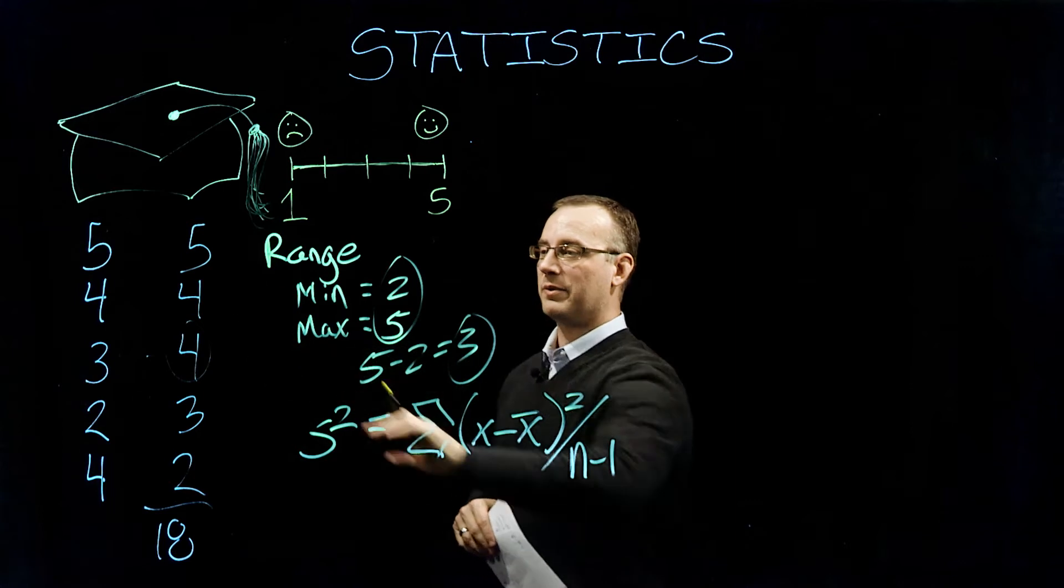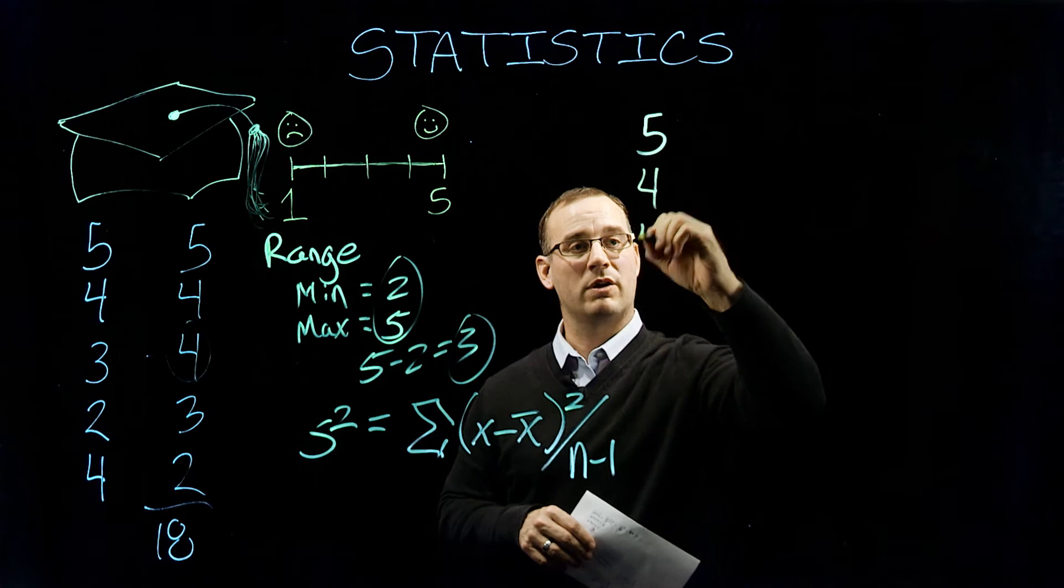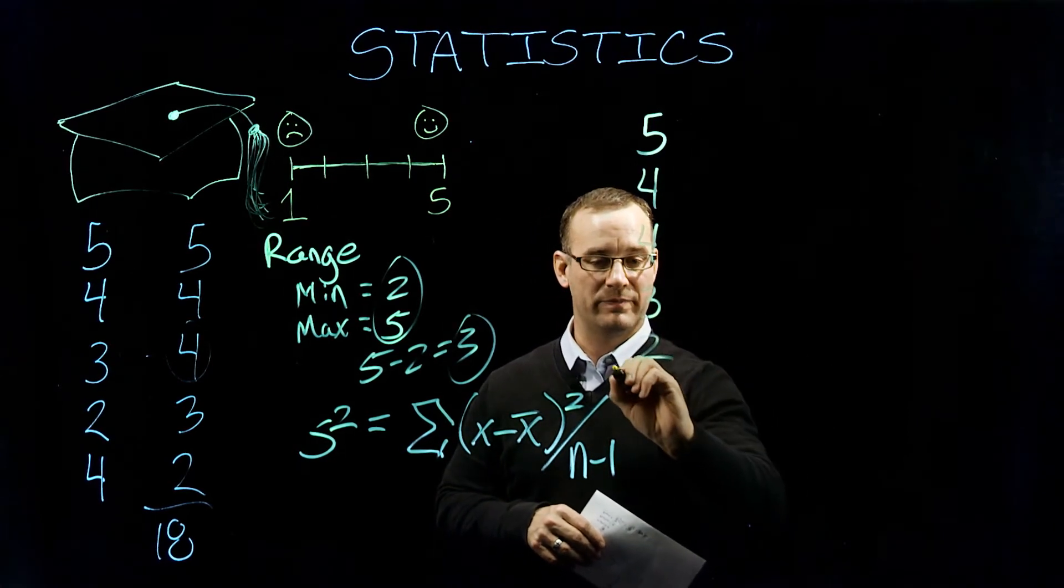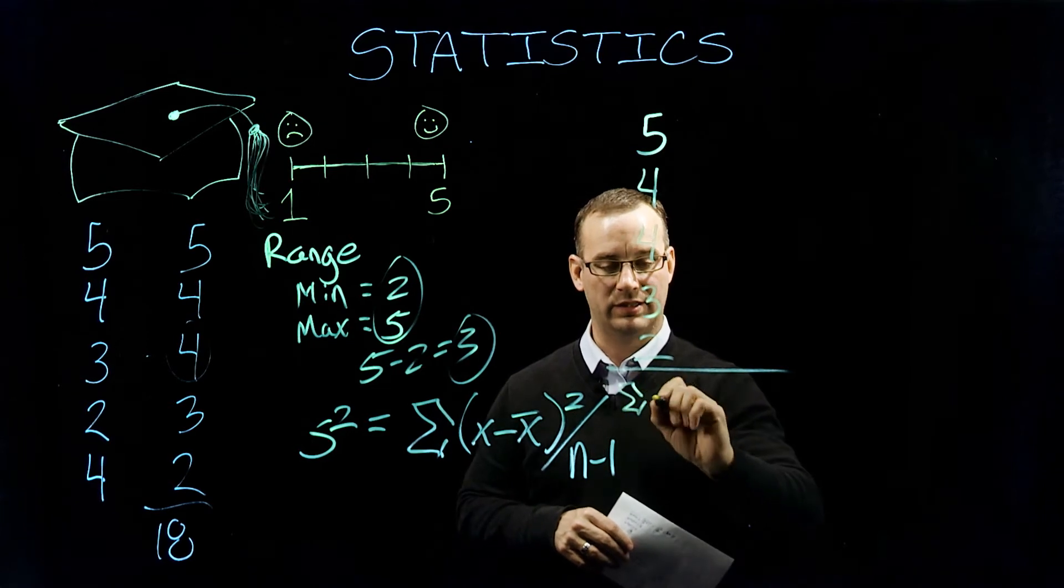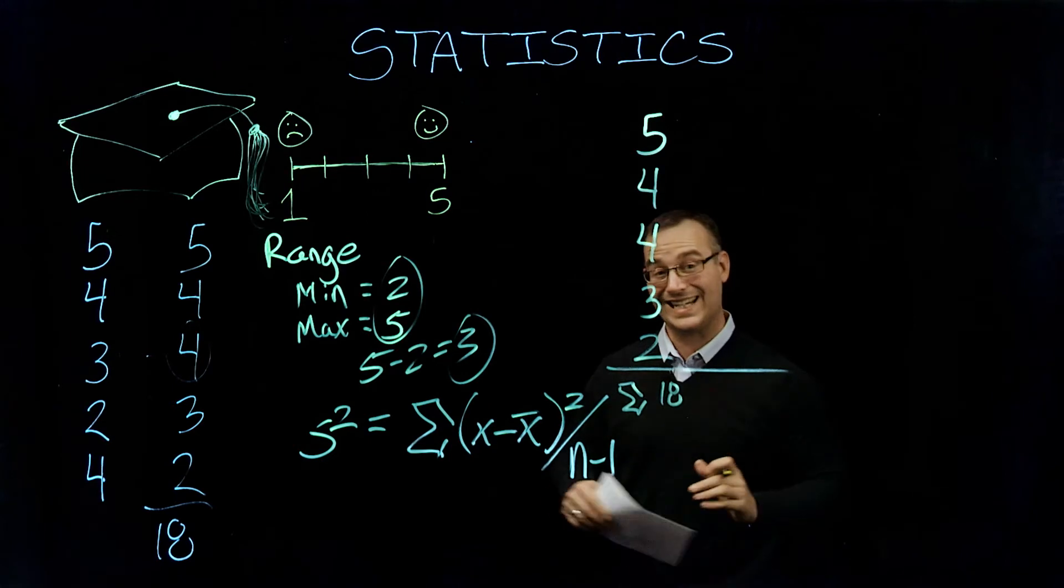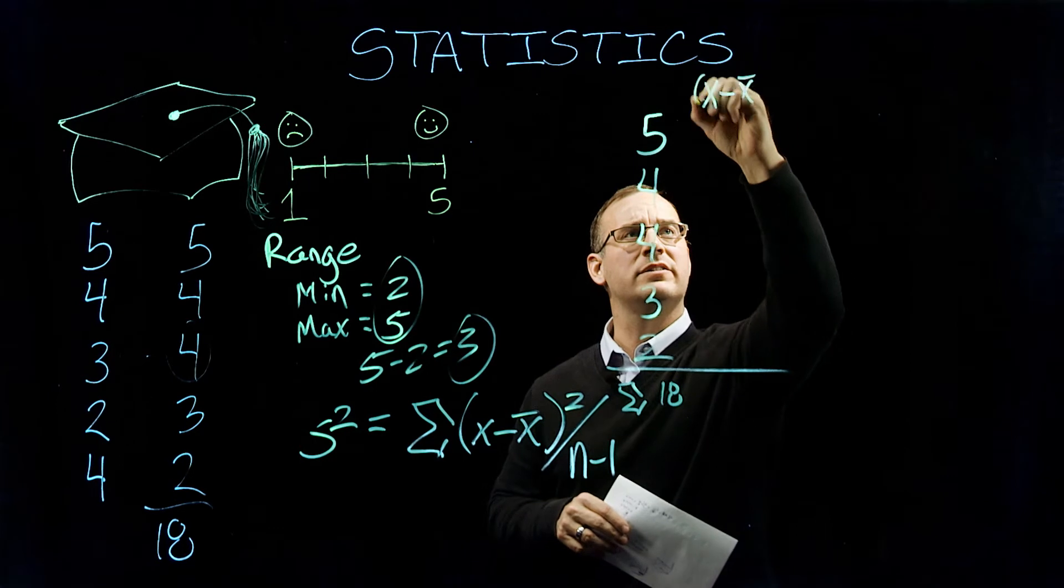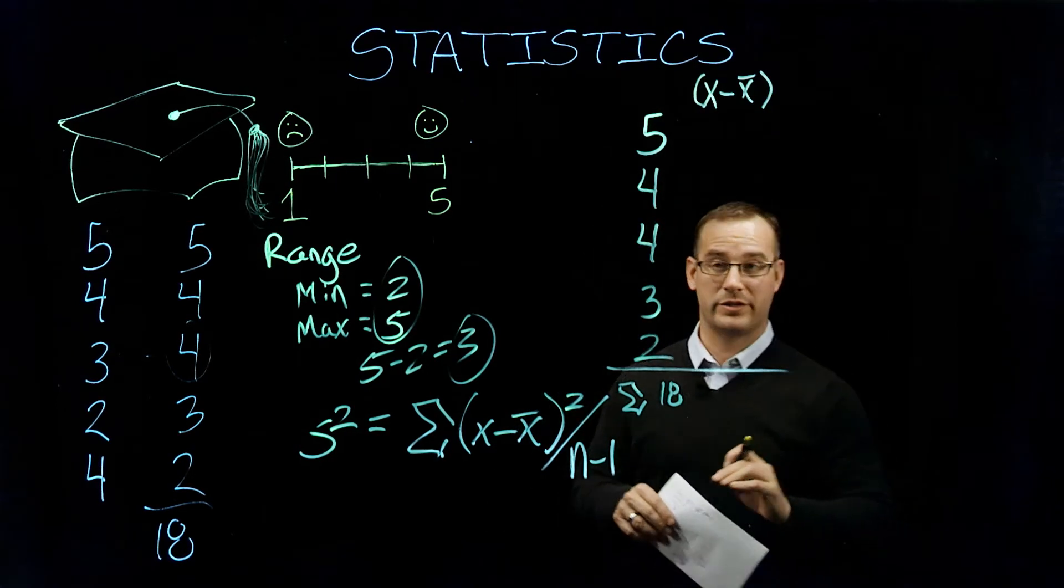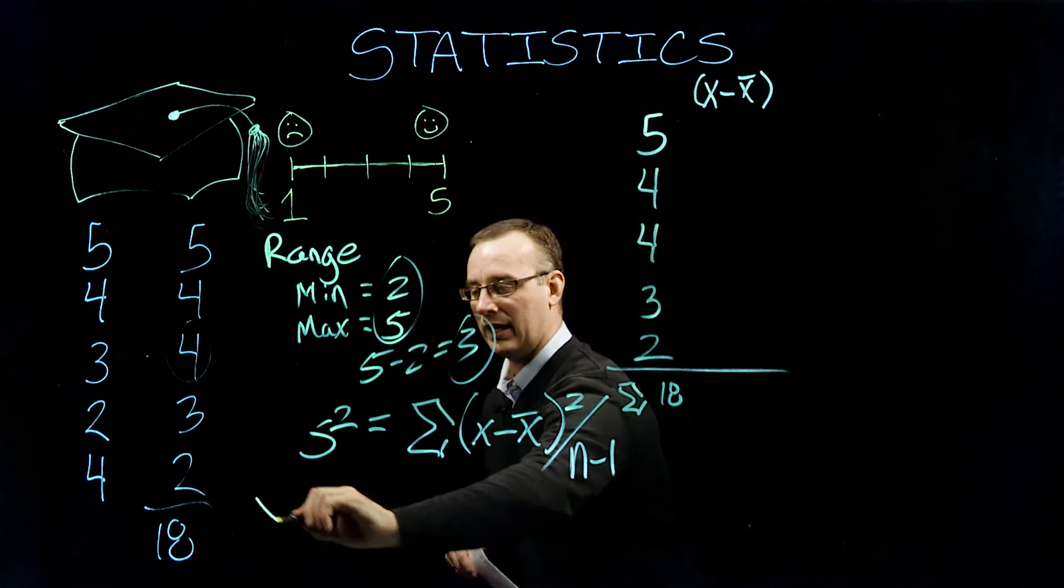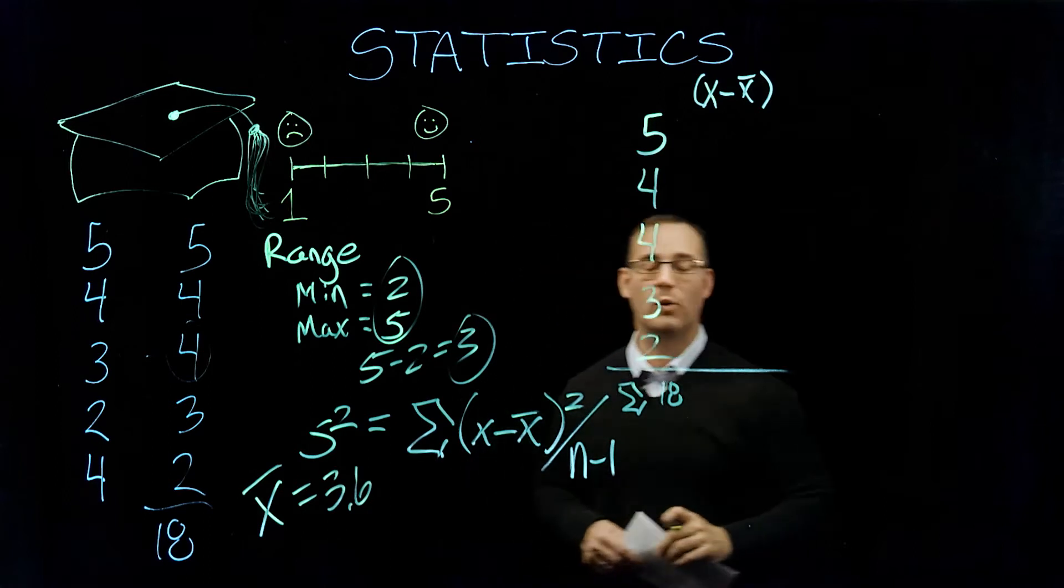So in order to be able to do that, we've got to take our raw data right here. We've got five, four, four, three, and two. And we're going to be calculating sums for each of these. Remember, the sum of our raw data was 18. And then we're going to calculate our differences from the mean first. That's our first step. So in essence, if you remember, our mean was 3.6.